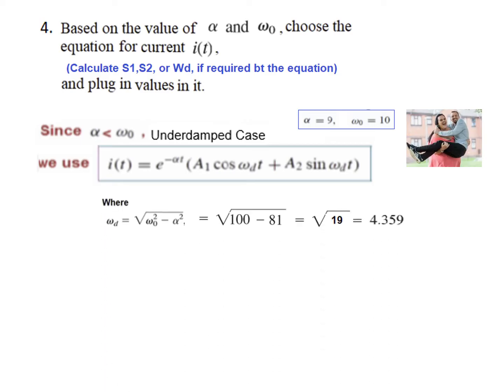For the under-damped case we need to calculate omega_d. Using the formula and substituting the values, omega_d = 4.359. We can now write the complete general equation for i(t): i(t) = e^(−9t) [A1·cos(4.359t) + A2·sin(4.359t)]. The next step is to find the values of A1 and A2 from this equation.